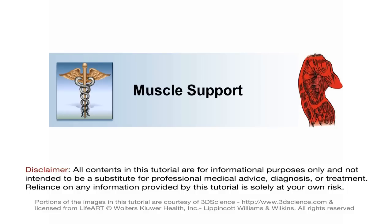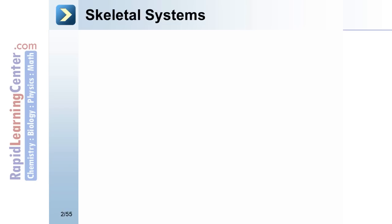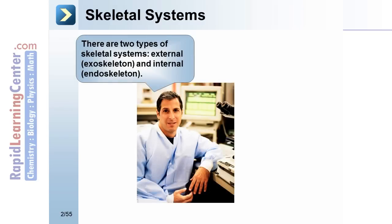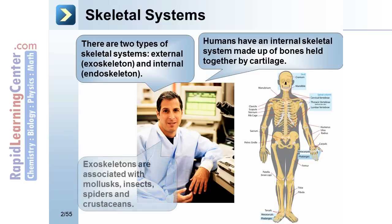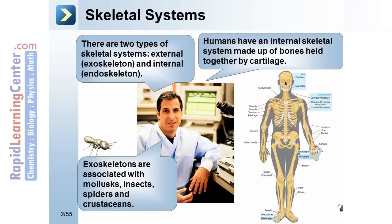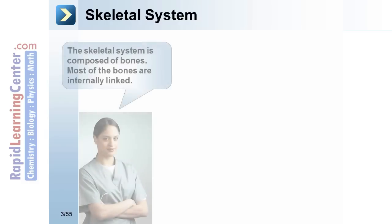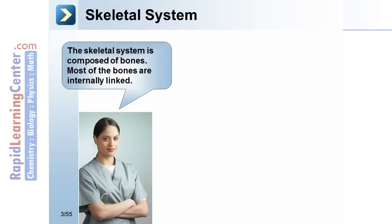There are two types of skeletal systems: external, which is known as the exoskeleton, and internal, which is the endoskeleton. Humans have an internal skeletal system made up of bones held together by cartilage. Exoskeletons are associated with mollusks and insects such as spiders and crustaceans.